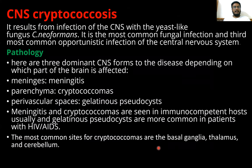CNS cryptococcosis results from infection of the CNS with the yeast-like fungus Cryptococcus neoformans. It is the most common fungal infection and the third most common opportunistic infection of the central nervous system. There are three dominant CNS forms depending on which part of the brain is affected: meningitis when the meninges are involved, cryptococcomas when the brain parenchyma is affected, and gelatinous pseudocysts within perivascular spaces. Gelatinous pseudocysts are more common in patients with HIV or AIDS. The most common sites are the basal ganglia, thalamus, and cerebellum.